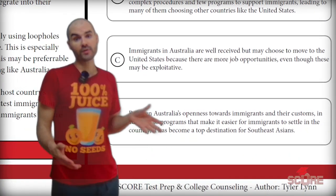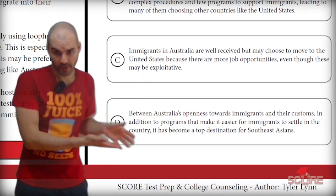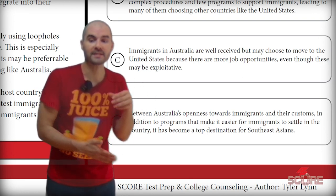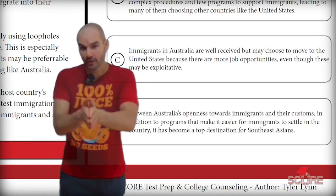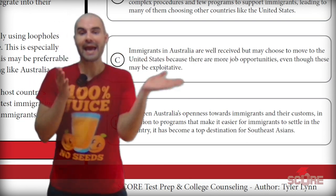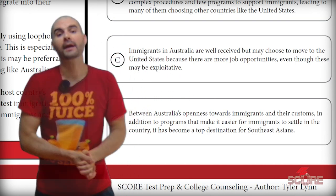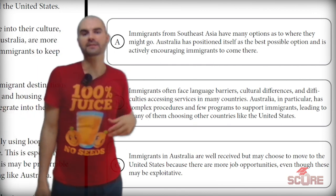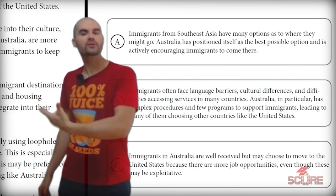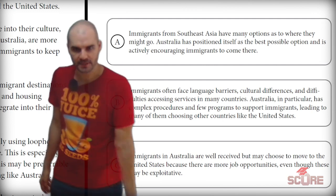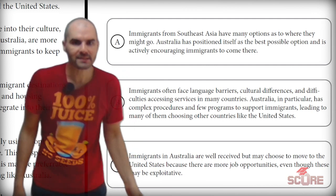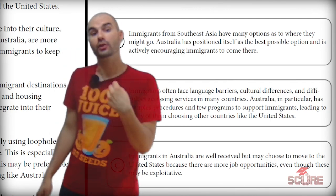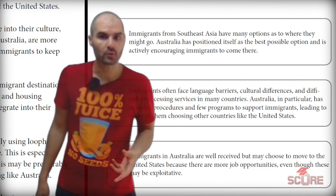D says between Australia's openness towards immigrants and their customs, in addition to programs that make it easier for immigrants to settle, it's become a top destination for Southeast Asians. That could also be a great answer. Now, between A and D, A is very general — it doesn't actually mention specific things from the notes — and D is much more specific. I want to choose the specific answer that uses the notes wherever possible, so all I'm going to do is try to look for that detail in the notes.